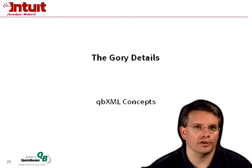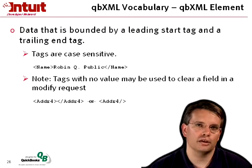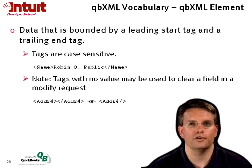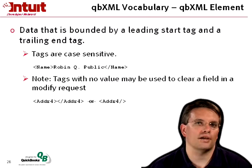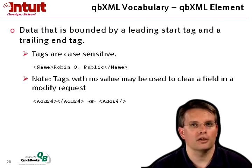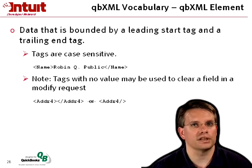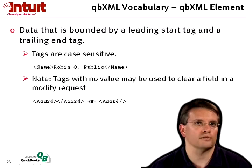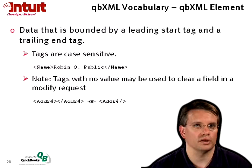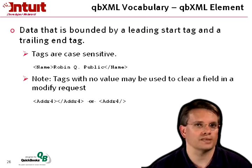First, some basic vocabulary. What we call a QBXML element is simply data that's bounded by the leading start and end tag. If you know even a little bit about XML, you can handle QBXML. Tags are case-sensitive. Tags with no value can be used to clear a field in a modify request — either with a beginning and end tag with nothing in between, or a self-closing tag with a slash at the end.